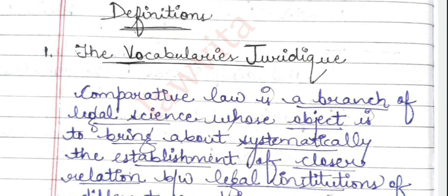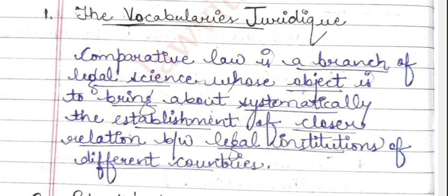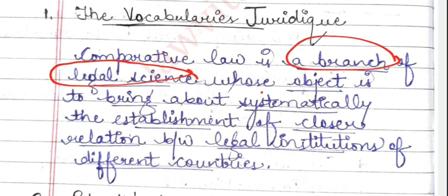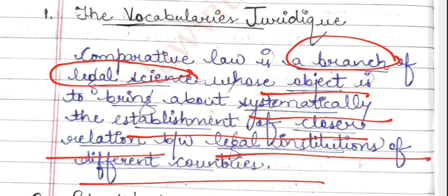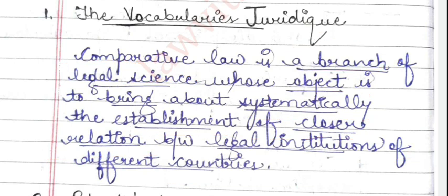Now I have quoted two definitions. First, from Vocabulary Juridica: Comparative law is a branch of legal science whose object is to bring about systematically the establishment of closer relationships between the legal institutions of different countries. The key elements to remember: comparative law is a branch of legal science.